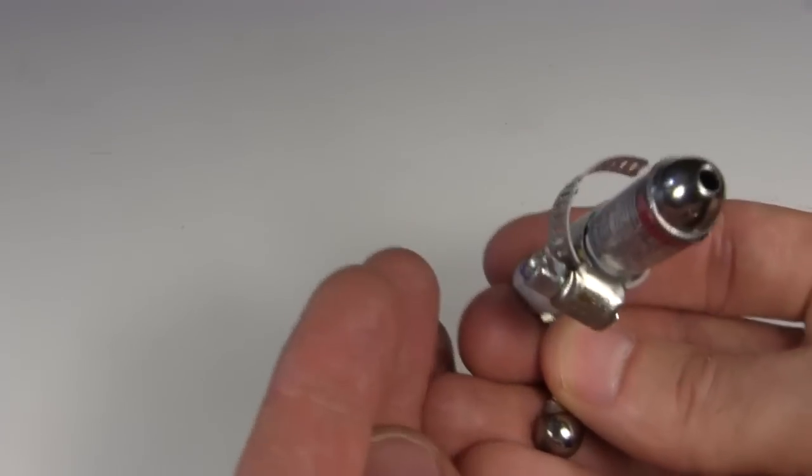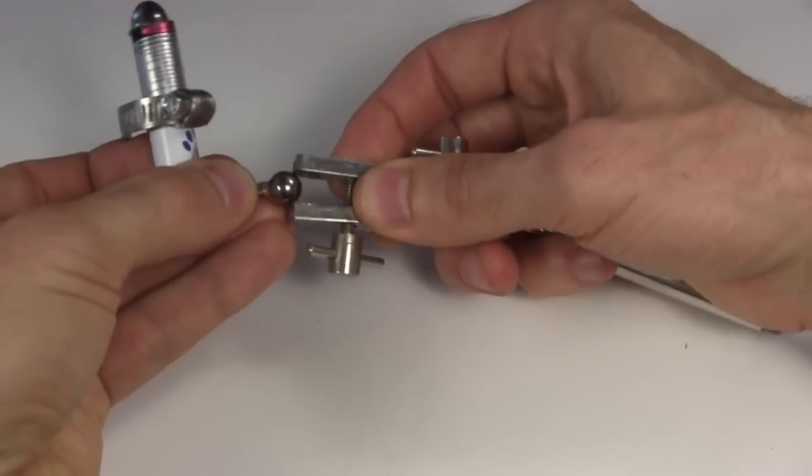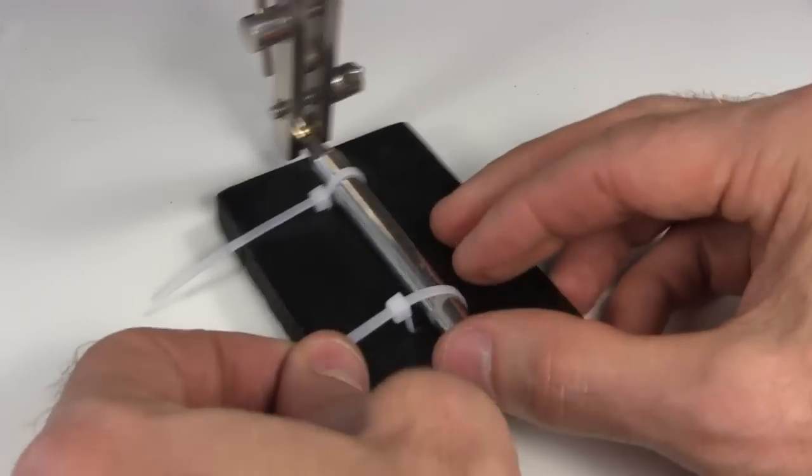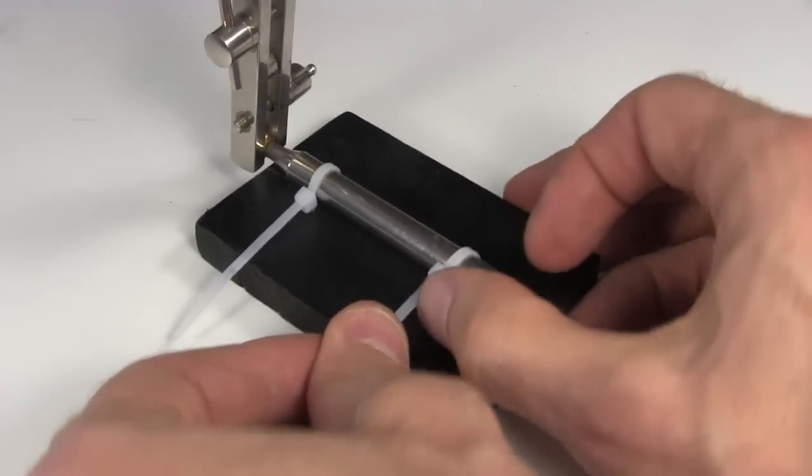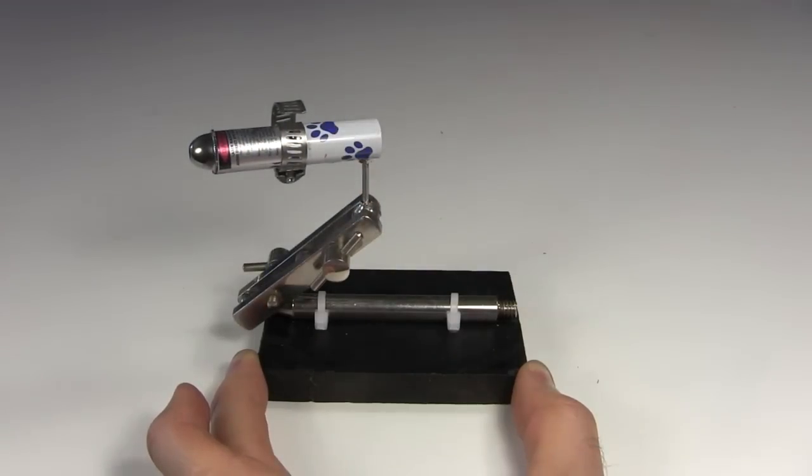So I wrap a hose clamp around that. I then put the ball in its socket. After painting the wood black, I attach all that to the stand. I can now point the laser at a target and it'll stay there.